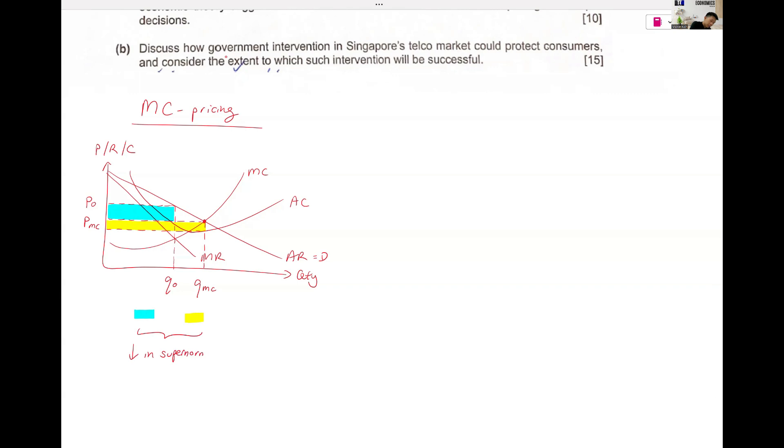This is the fall in supernormal profits. I know it's been a while since we went through market structure. So I'm going to ask based on this diagram, do you have any questions?